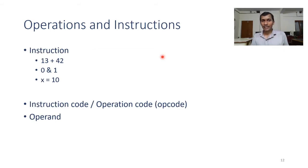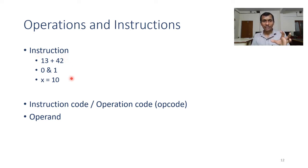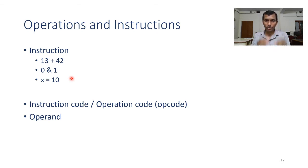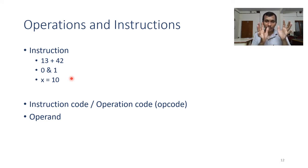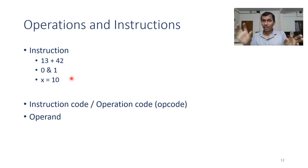Back to operations and instructions — there are a variety of software operations. These operations can be specified using instructions. An instruction has two important parts: the first part is called the instruction code, also known as operation code or op code. The second part is the operand. These two parts are used to specify an instruction.